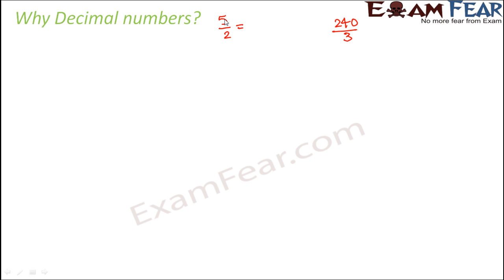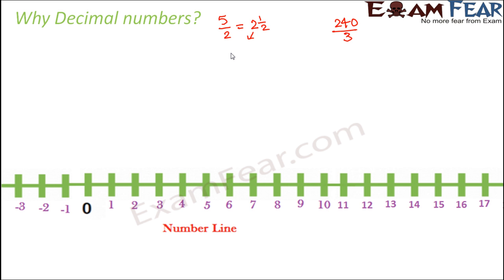So how can you write 5 by 2? This is an improper fraction which can also be written as 2 1 by 2 in the form of mixed fraction. So when you look at this fraction, what is 2? 2 is a whole number. So we know what is 2, it is a whole number, it is very well represented on the number line as well. So when you look at the number line, where is 2? If I ask you where is 2, you will say this is 2.